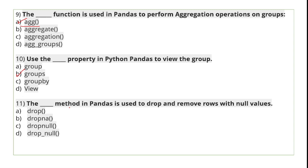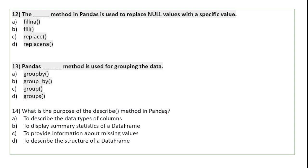The method in pandas used to drop and remove rows with null values is the dropna function. It removes the rows that contain null values.